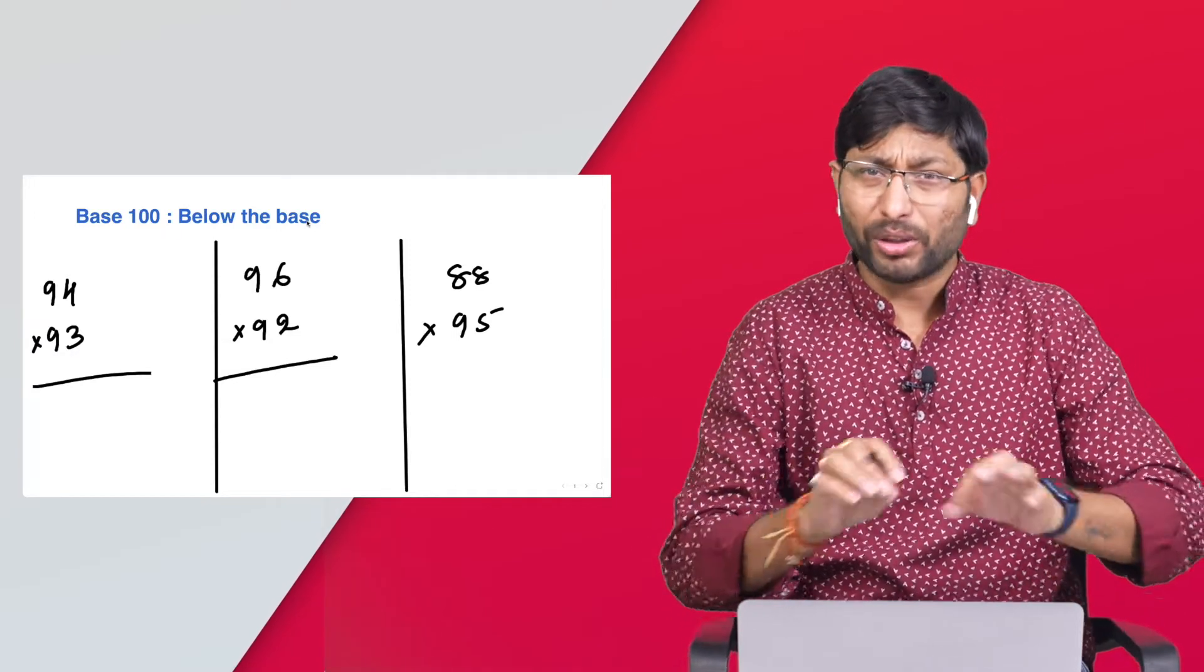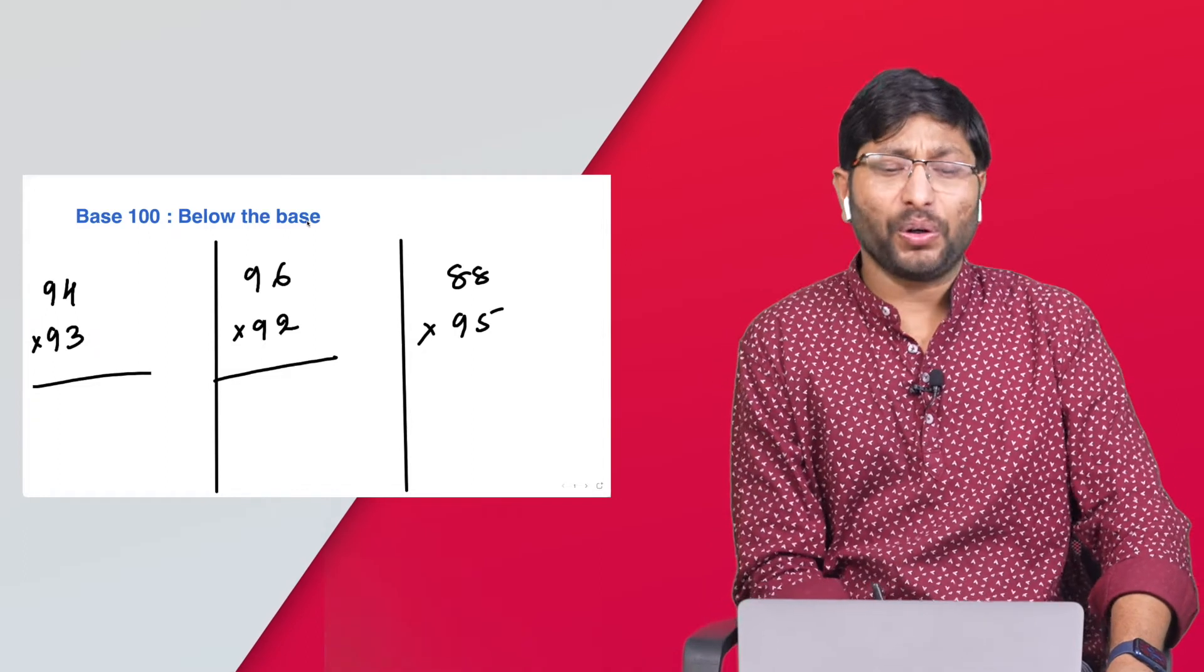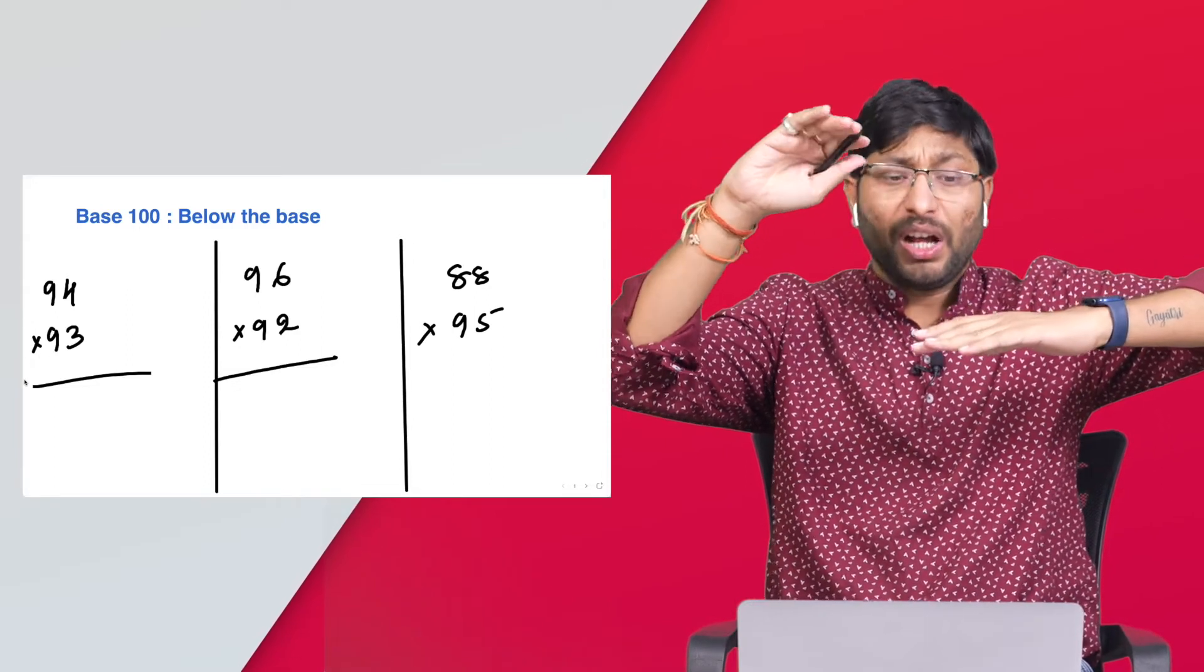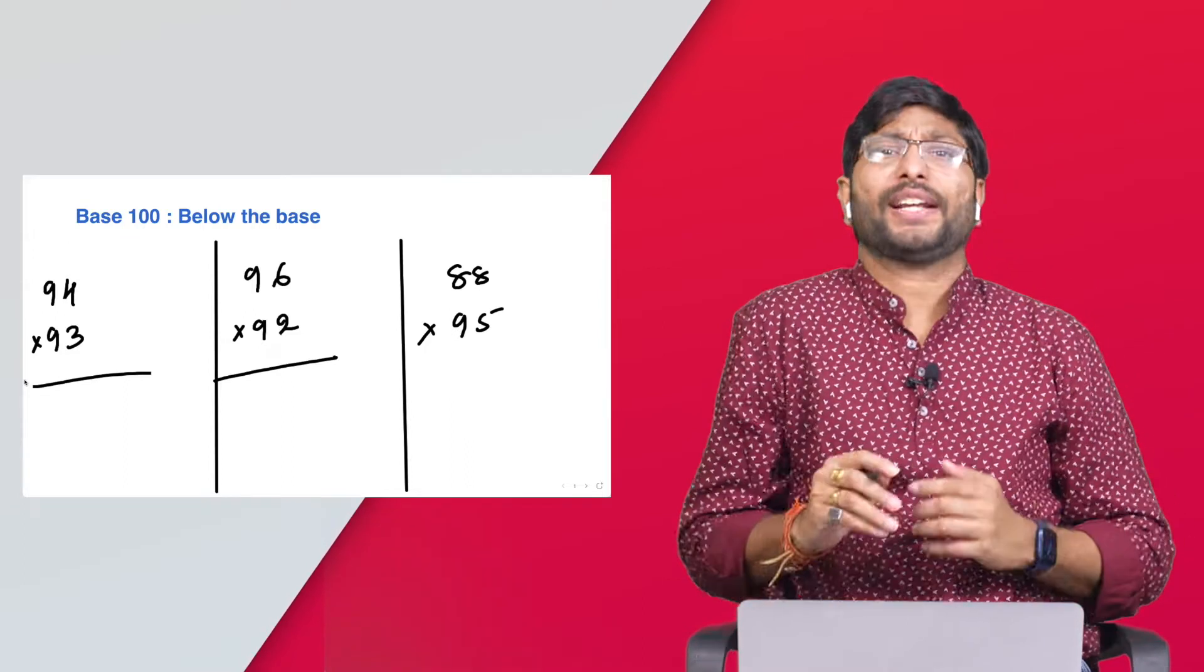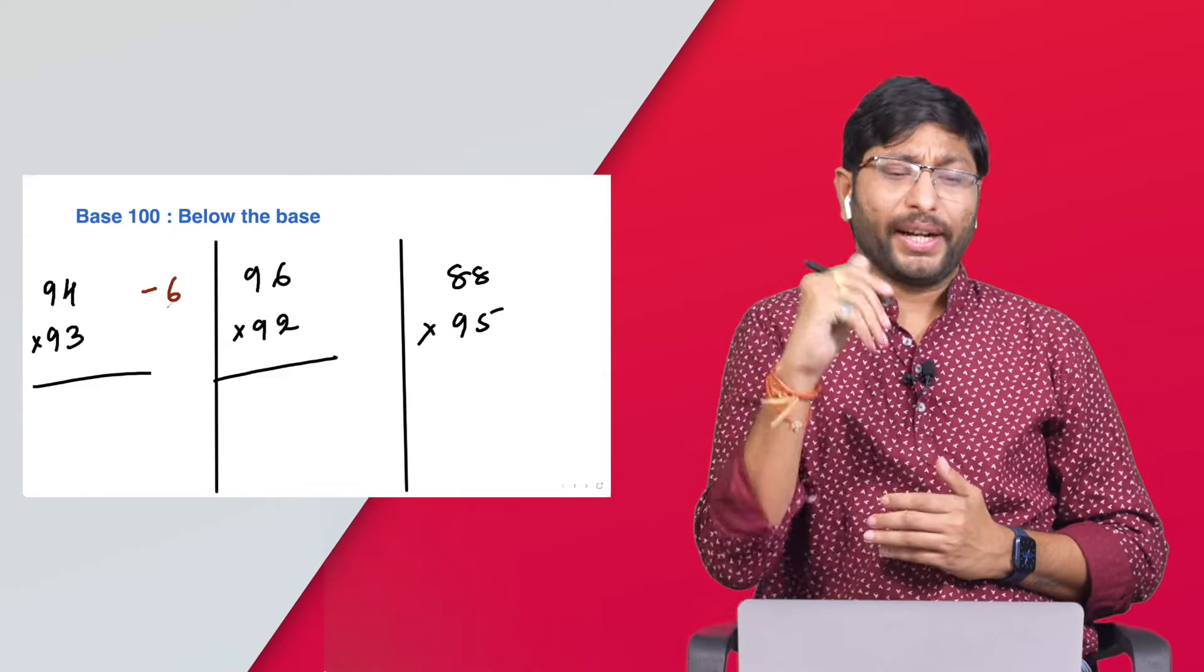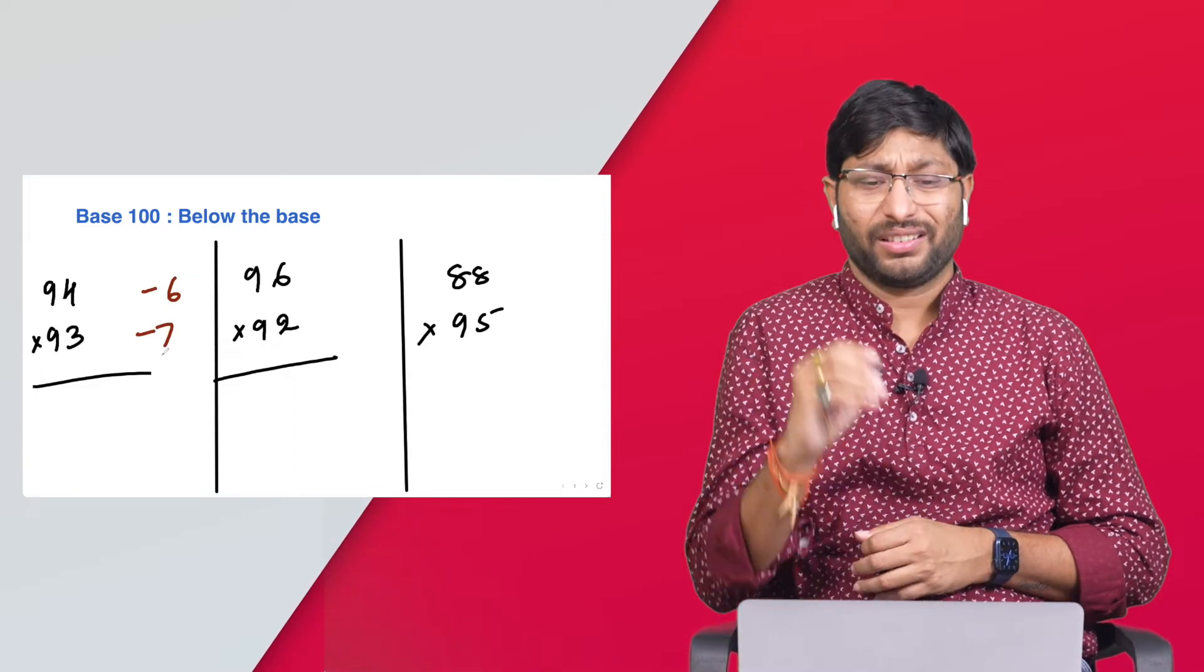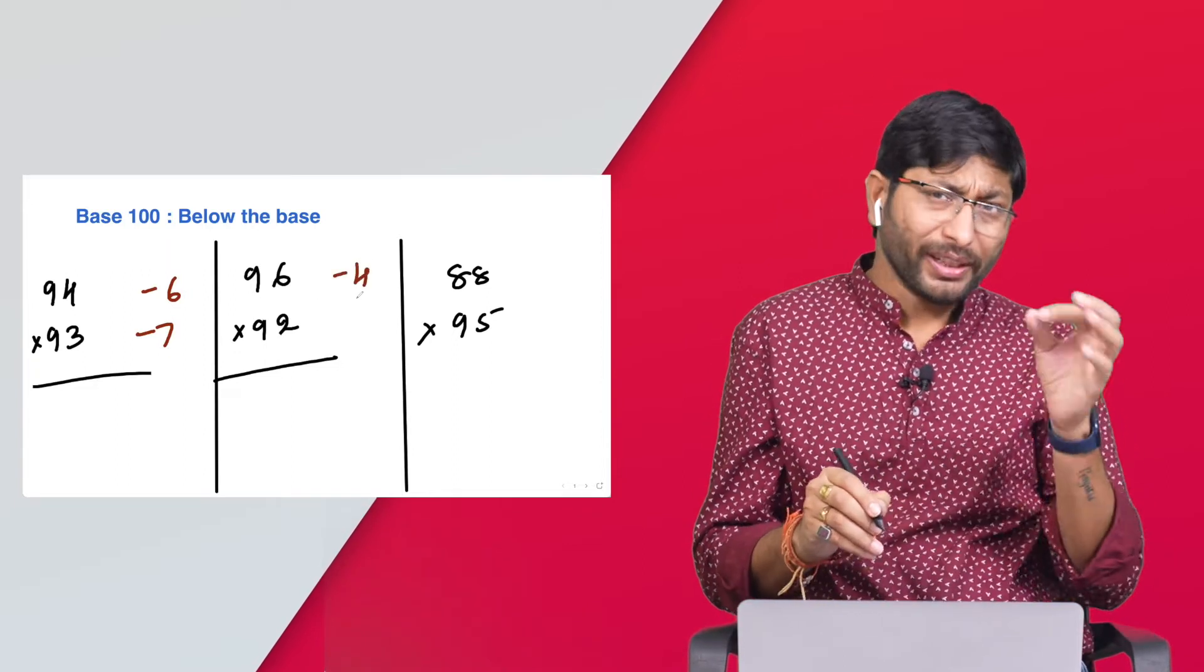As you watch the previous video and watch this video till the end, you'll understand both are similar but not the same. 94 multiply with 93. So 94 is nearby 100. So 94 is lesser, below the 100. 100 minus 6 will give you 94. 100 minus 7 will give you 93.